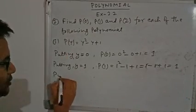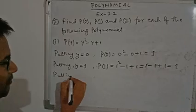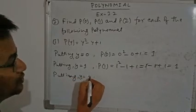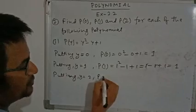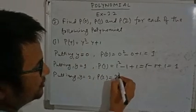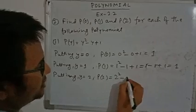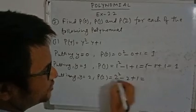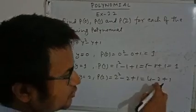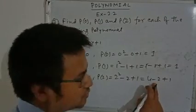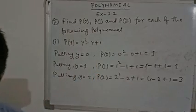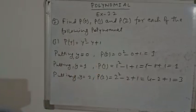Now putting Y equals 2 for P(2). So P(2) equals 2 squared minus 2 plus 1. 2 squared is 4, so 4 minus 2 plus 1. 4 minus 2 is 2, and 2 plus 1 equals 3. In this way you can solve this question.